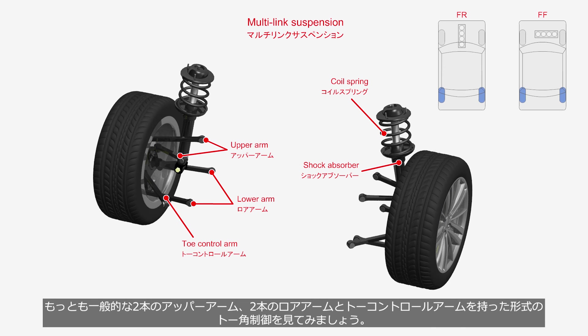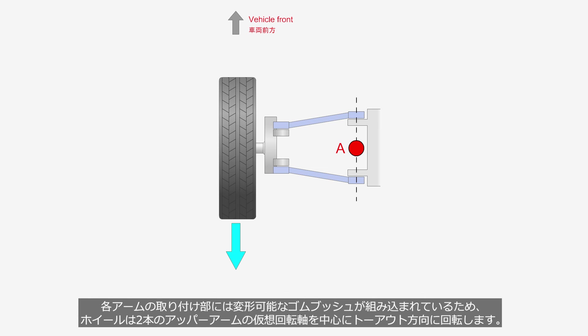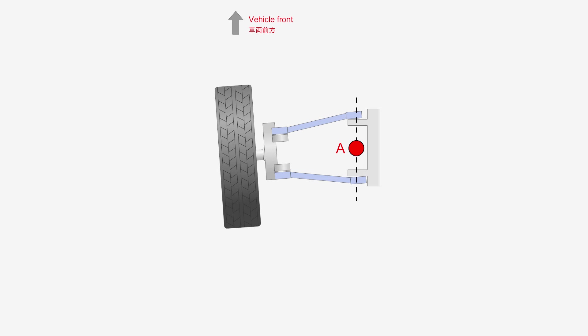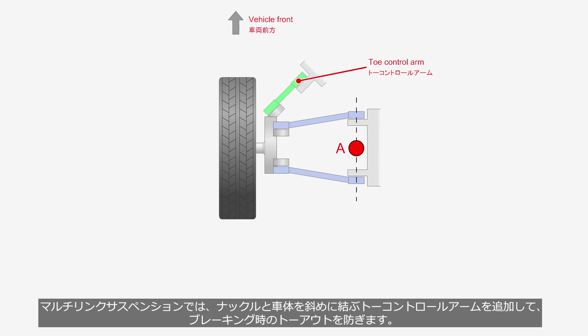Let's take a look at the most common type of multi-link suspension, with two upper arms, two lower arms, and a toe control arm, focusing on toe angle control. When braking, backward forces are applied to the tire, but the vehicle body tends to move forward due to inertia. Since each arm's pivot incorporates deformable rubber bushings, the wheels rotate in the toe-out direction around the virtual pivot axis A, formed by the two upper arms. Because toe-out of the rear wheels compromises stability, toe-out during braking is undesirable. In a multi-link suspension, a toe control arm is added, connecting the knuckle to the vehicle body at an angle, to prevent toe-out during braking.